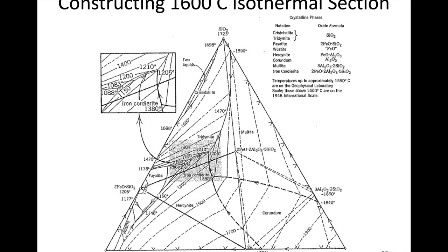It's often useful to construct isothermal sections from a ternary phase diagram — this can help simplify things. So what we're going to do first when we construct one of these isothermal sections is, for whatever temperature we're looking at — in this example, 1600 degrees Celsius — we're going to find the temperature contours of the liquidus that match that temperature.